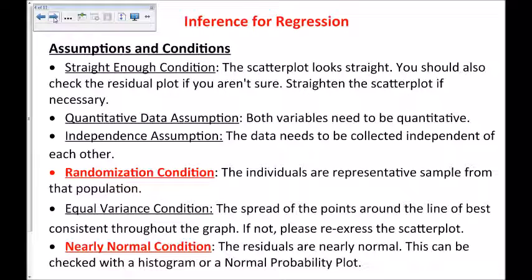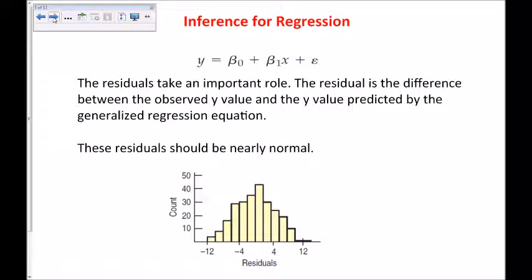The last and very important one is the nearly normal condition. The residuals need to be nearly normal. This can be checked with a histogram or a normal probability plot. So, the residuals take on an important role. The residual is the difference between the observed y-value and the y-value predicted by the generalized regression equation. And we can look at the residuals and a distribution of the residuals, and it should look normal.